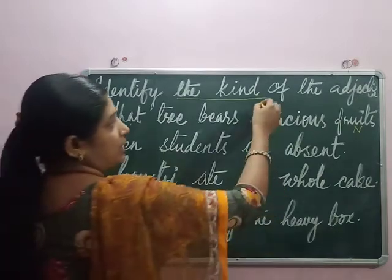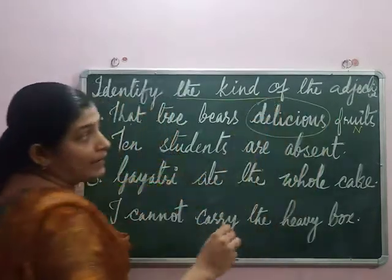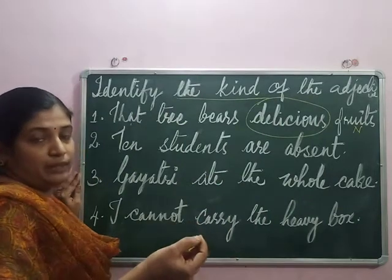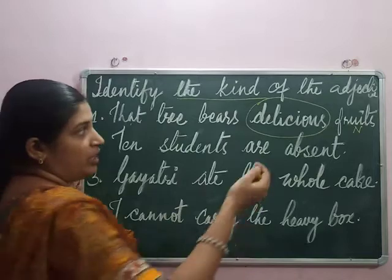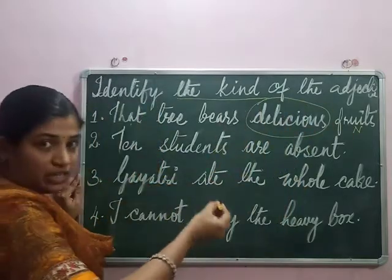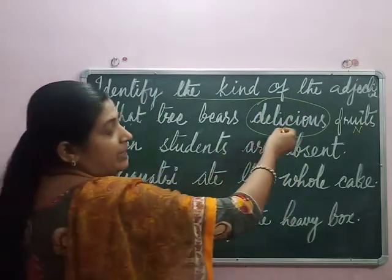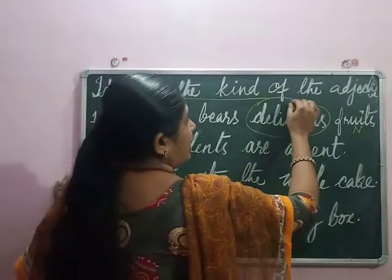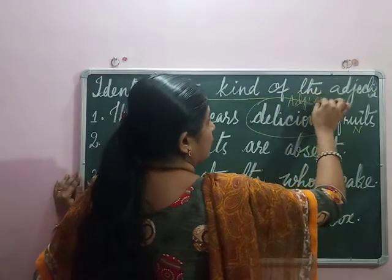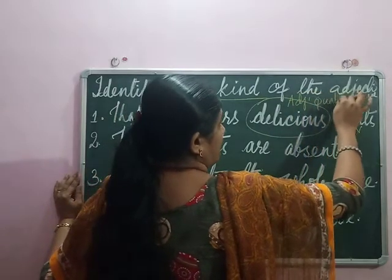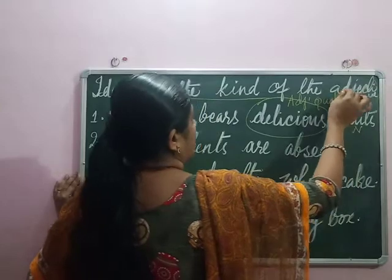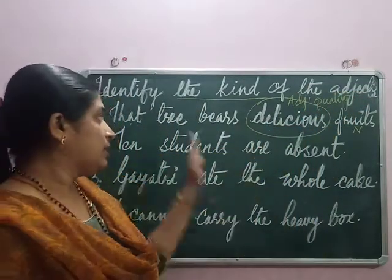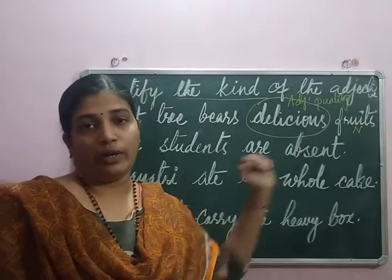What kind of adjective is that? Delicious — what kind of fruit? It is a delicious fruit. Here the adjective shows the quality of the fruit, so delicious is the adjective of quality. We have identified adjective of quality. When you are writing in the examination, you have to write: delicious — adjective of quality.